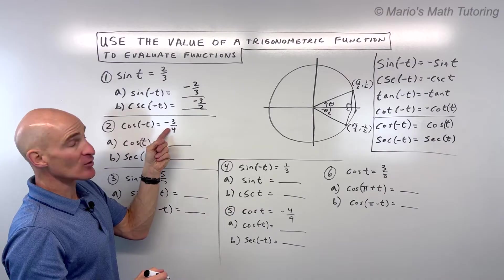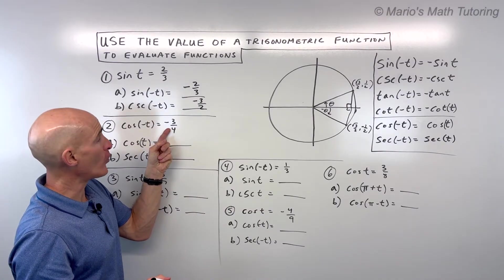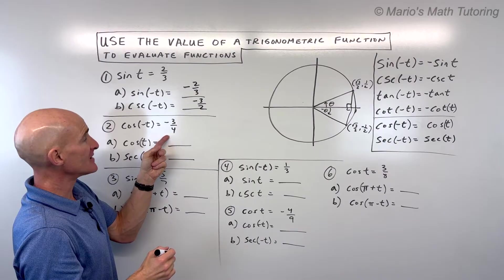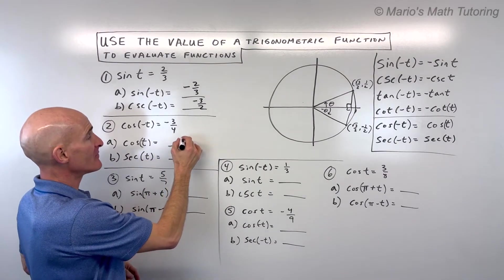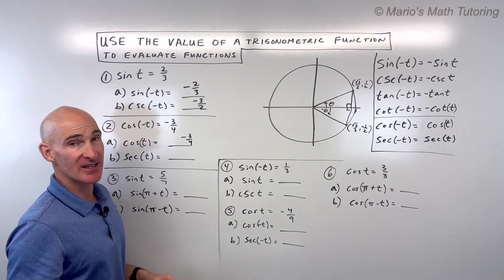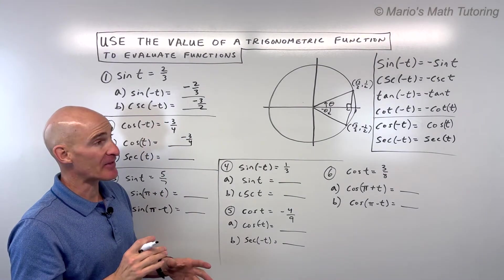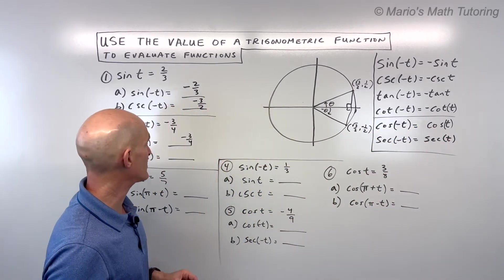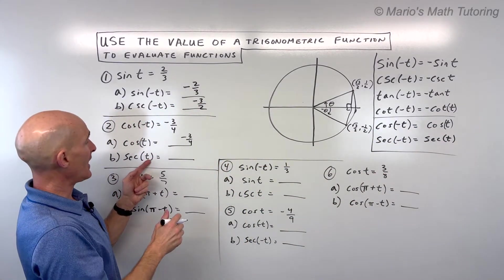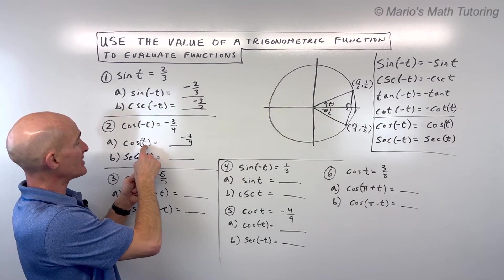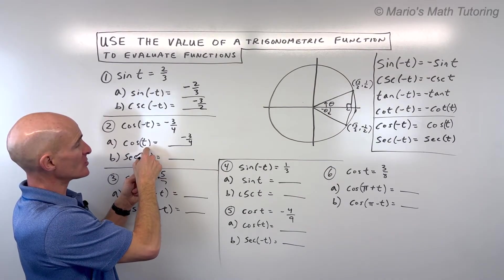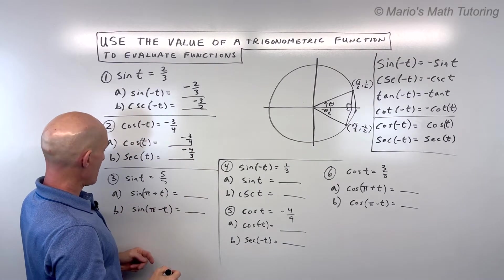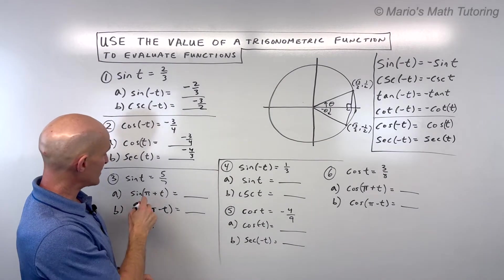For number 2: cosine of negative t is equal to negative 3 fourths. What is cosine of positive t? Same thing — negative 3 fourths. Remember, cosine is an even function, so you get the same answer. Secant of the angle is the reciprocal of cosine of that angle, so flip it over: negative 4 thirds. Now for number 3, a little more challenging.